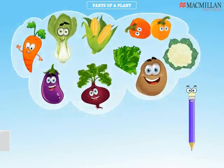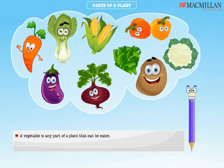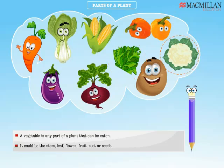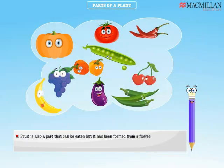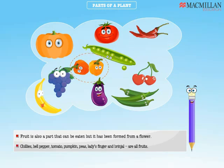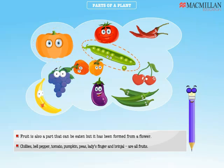Did you know that a vegetable is any part of a plant that can be eaten? It could be the stem, leaf, flower, root or seeds. But a fruit has been formed from a flower. Chilis, bell pepper, tomato, pumpkin, peas, lady's finger and brinjal are all fruits.